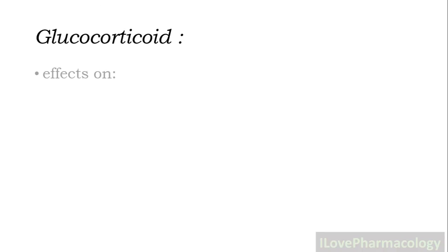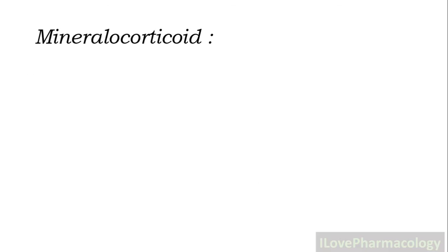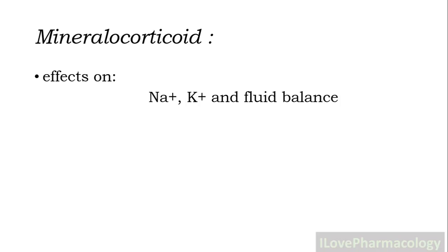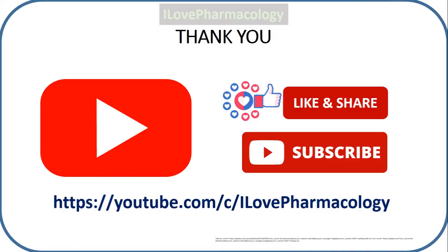Glucocorticoids have effects on carbohydrate metabolism, protein metabolism, and fat metabolism, whereas mineralocorticoids mainly affect sodium, potassium, and fluid balance. The major mechanisms of glucocorticoids and mineralocorticoids will be covered in the next video. If you like the video, please subscribe to the channel 'I Love Pharmacology.' Thank you.